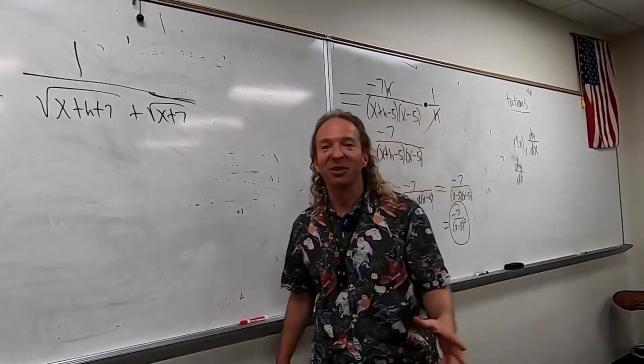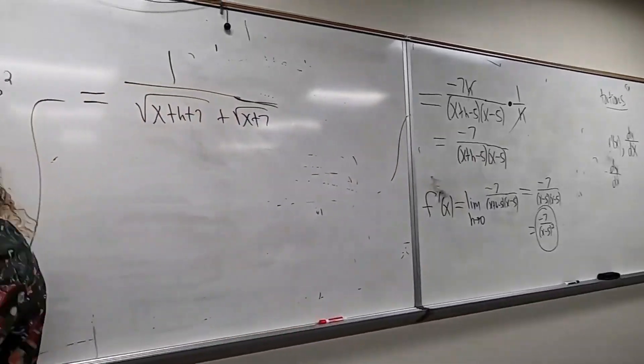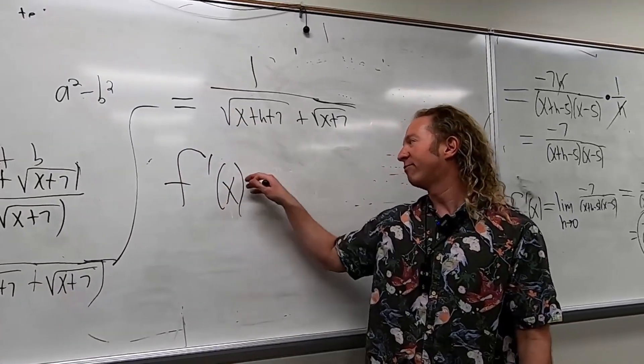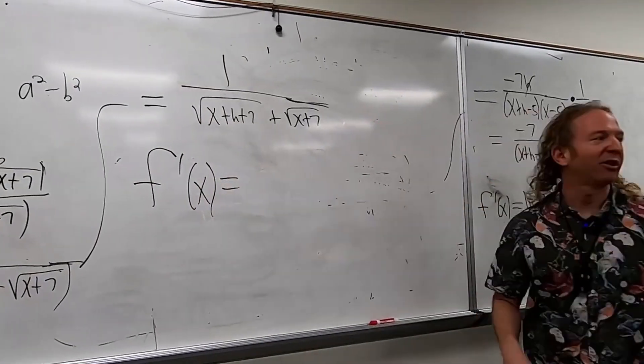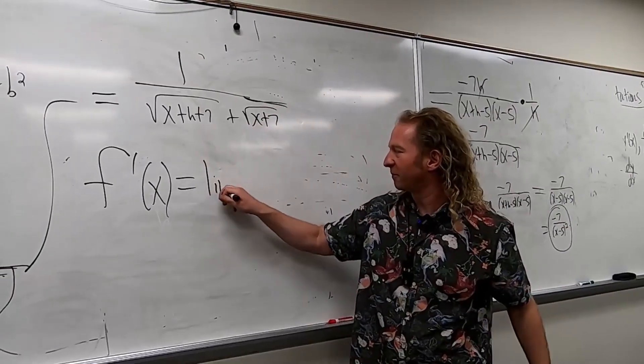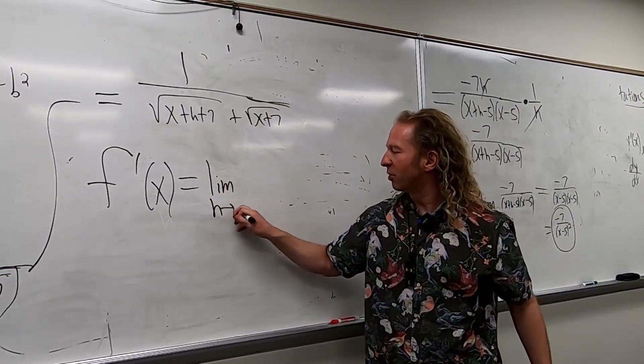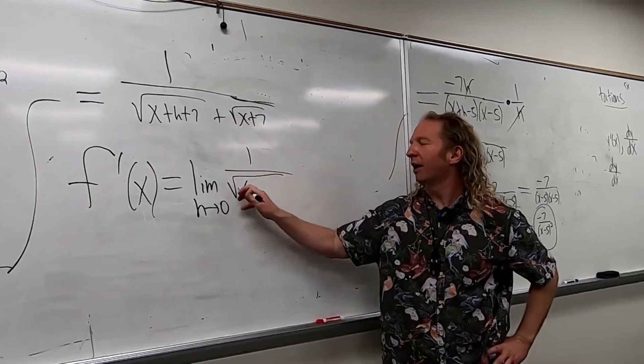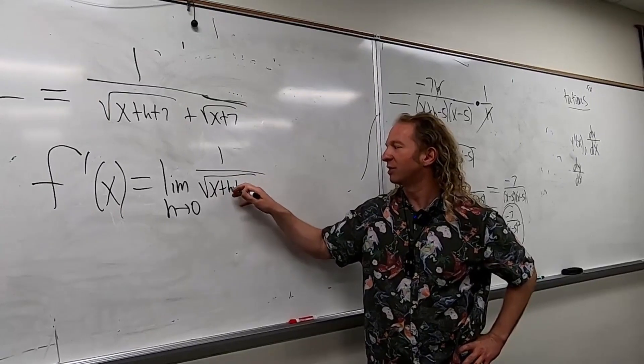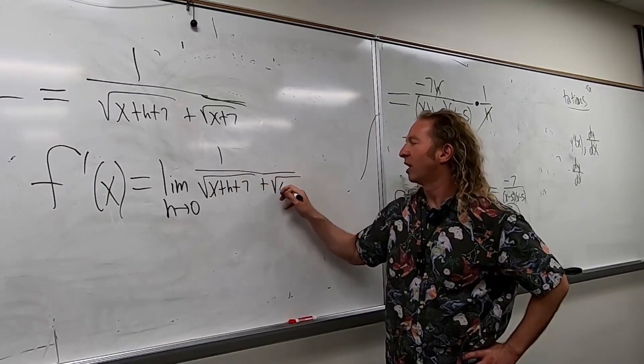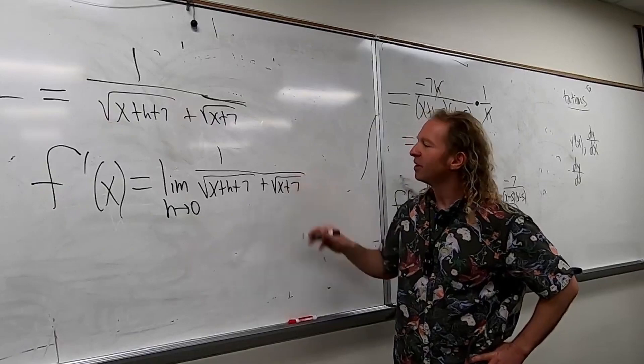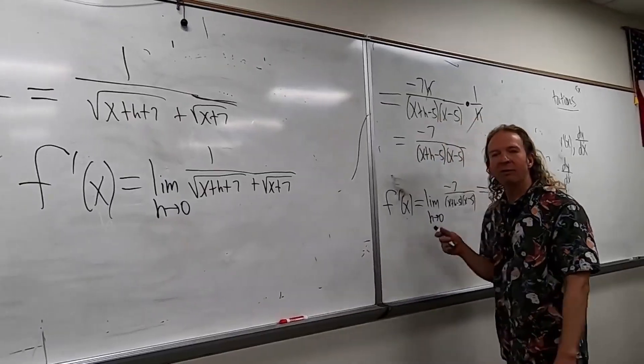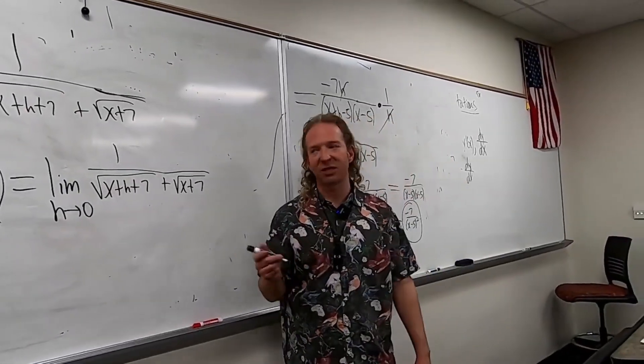What do we do next? Take the limit. f prime of x is the limit of that, the limit of the slope of the secant line. So limit as h approaches 0 of 1 over square root x plus h plus 7 plus square root x plus 7. It's just a formality—don't forget to write f prime, the equals, the limit.